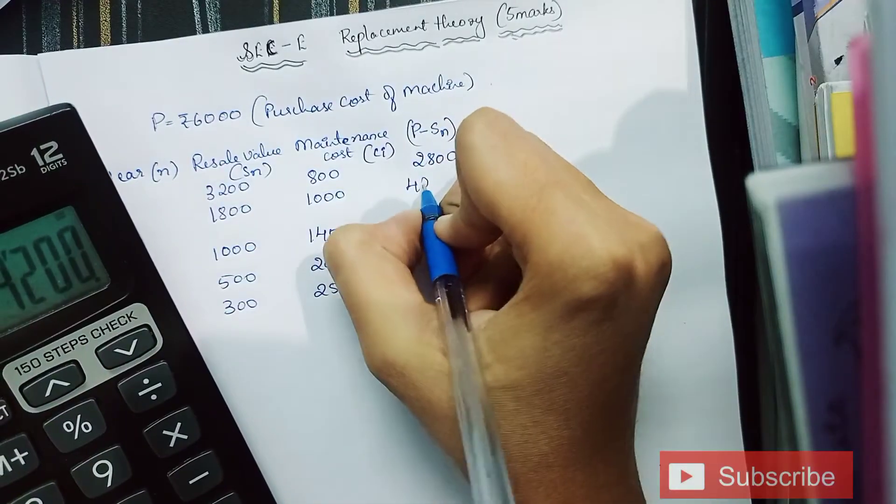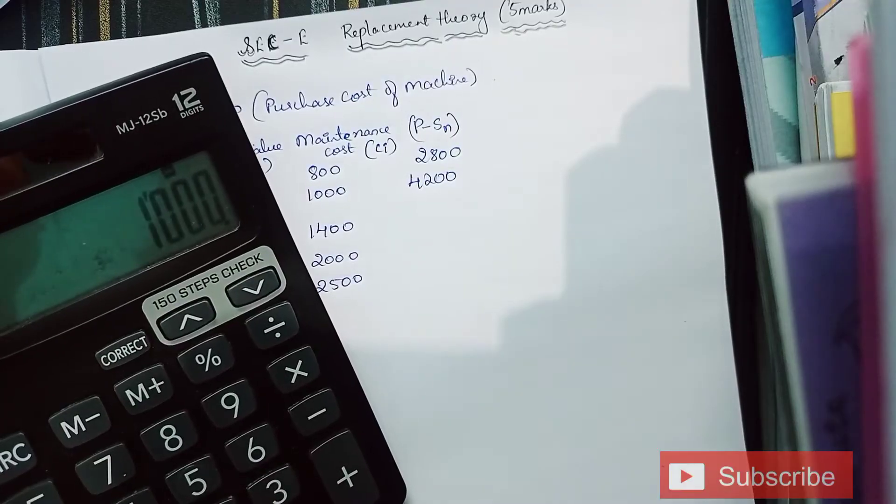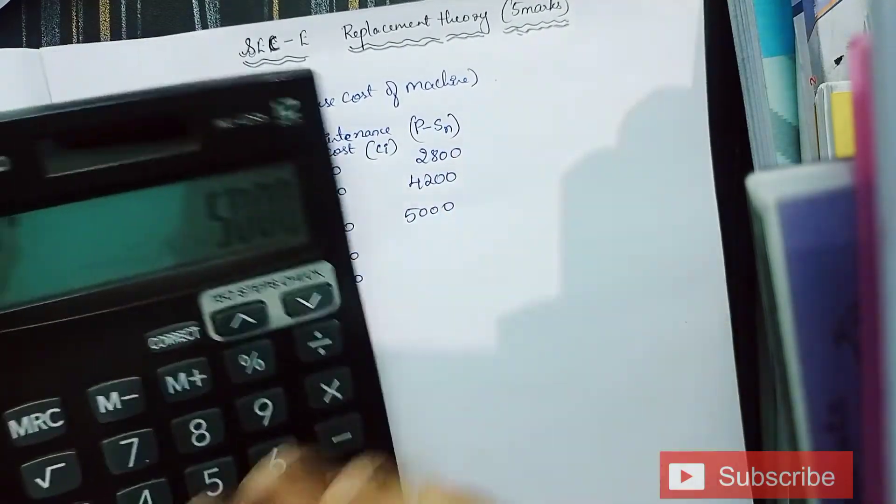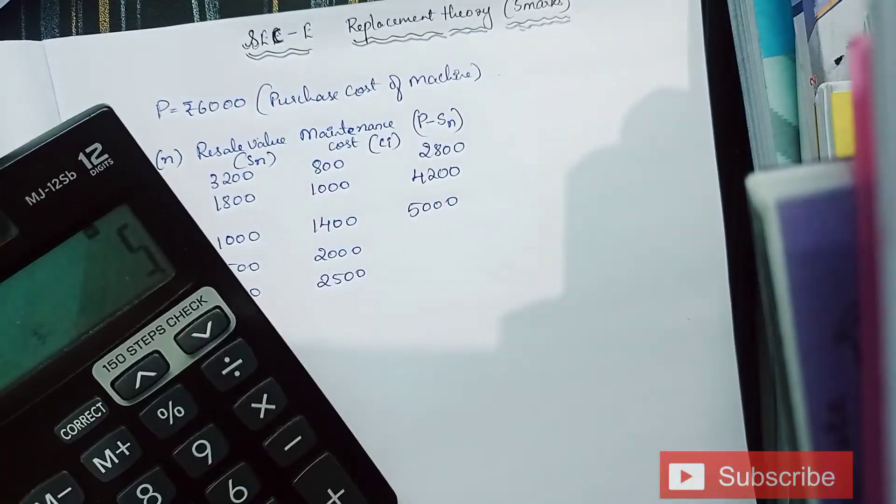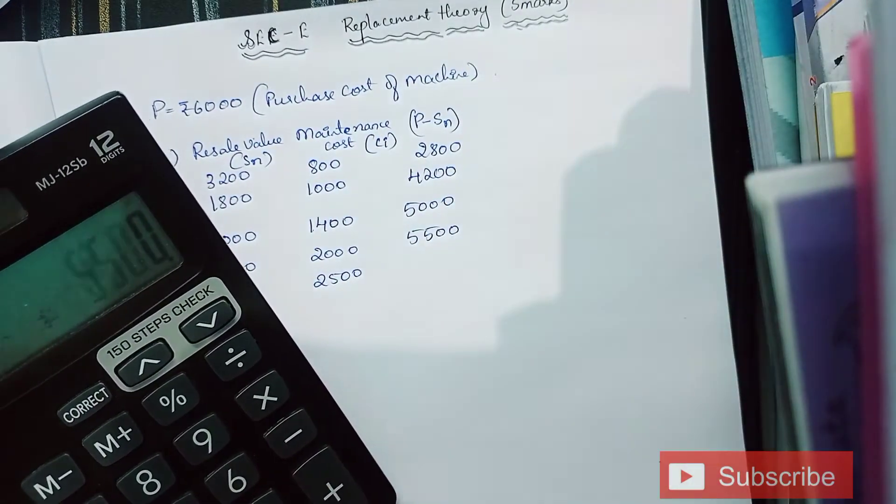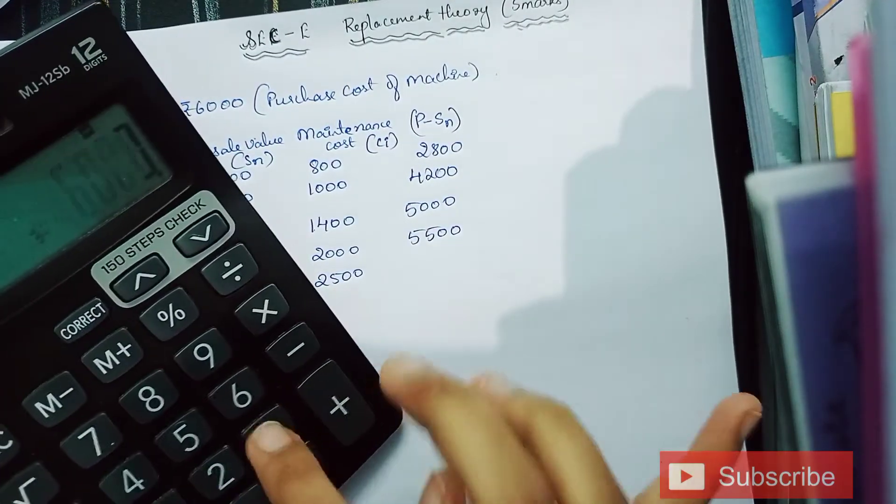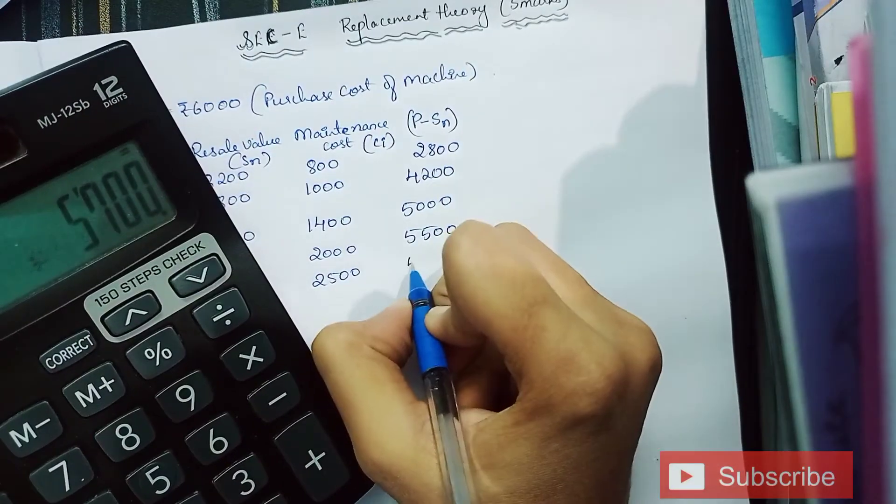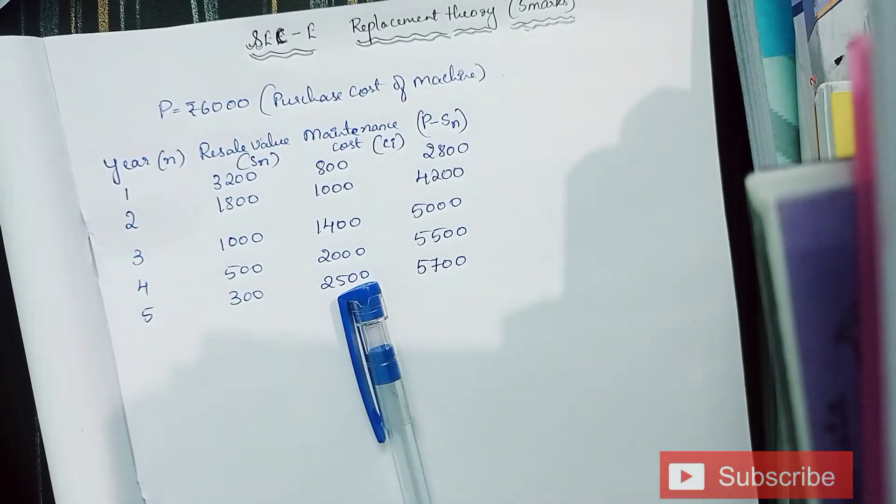6000 minus 1000 is 5000. Next is 6000 minus 500 which is 5500. And lastly it is 6000 minus 300 which is 5700.